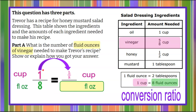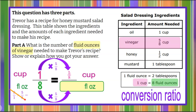We know that one multiplied by five-eighths is five-eighths. We must do the same to the other part of our ratio: eight multiplied by five-eighths. Eight divided by eight is one, giving us five over one, meaning five. So we know that five-eighths of a cup is equivalent to five fluid ounces — Trevor needs five fluid ounces of vinegar for his recipe.